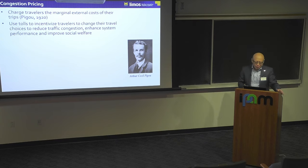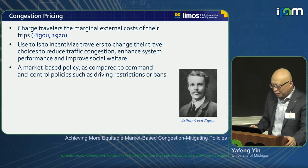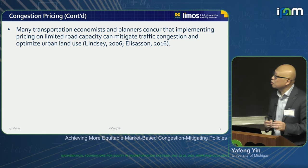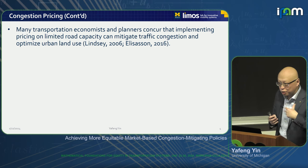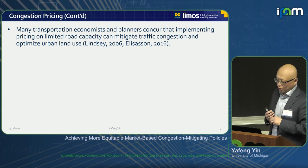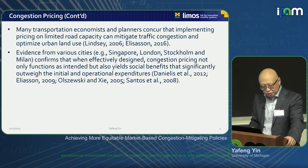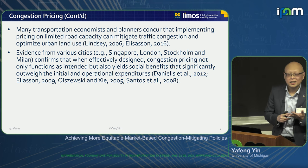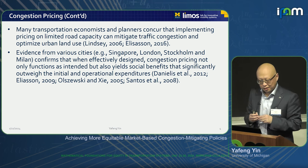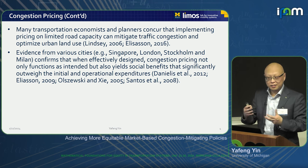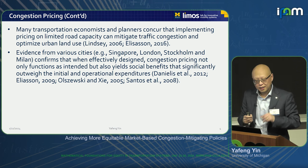For engineers, I say congestion pricing is a toll to incentivize travelers to change their travel choices to reduce congestion, enhance system performance, and improve social welfare. This is a market-based instrument, as compared with command-and-control policies like driving bans and driving restrictions. Most economists and many planner-engineers believe congestion pricing is a good idea. We also have very successful implementations in Singapore, London, Stockholm, and Milan. Those examples actually support that, when properly designed, congestion pricing functions as intended — improving social welfare and reducing congestion.